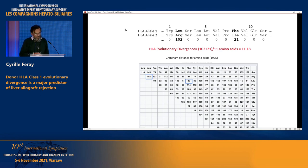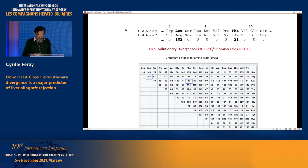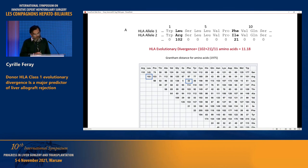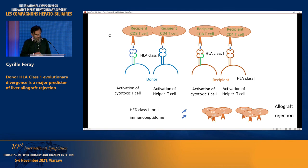The HLA evolutionary divergence is simply the physicochemical divergence between the two alleles, calculated by an established measure — the Grantham distance — a very old measure based on comparison of amino acids. With small divergence, we can immediately calculate the physicochemical divergence between the two alleles. The more divergent the two alleles, the richer and more complex the immunopeptidome.